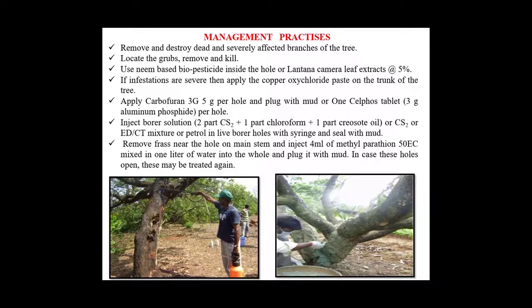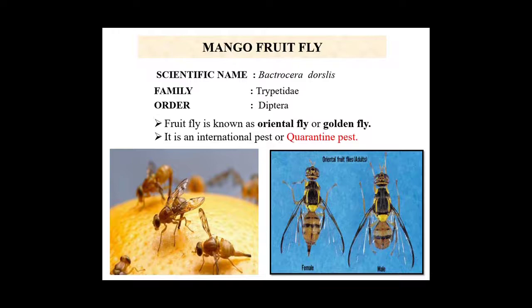The second important pest of mango is mango fruit fly. The scientific name is Bactrocera dorsalis and it belongs to family Tephritidae and order Diptera. This pest has international importance and is a quarantine pest. Mango fruit fly is also called the oriental fly or the golden fly.